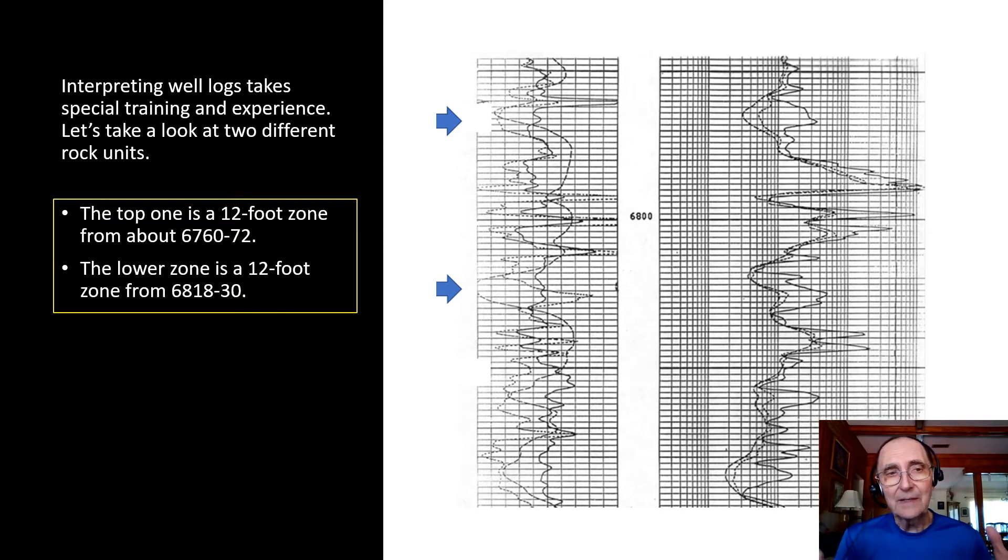Interpreting well logs takes special training and experience. Let's look at two different rock units. The top one that you see on the log is a 12-foot zone from a depth of 6760 to 6772. The bottom one is another 12-foot zone that goes from 6818 to 6830.